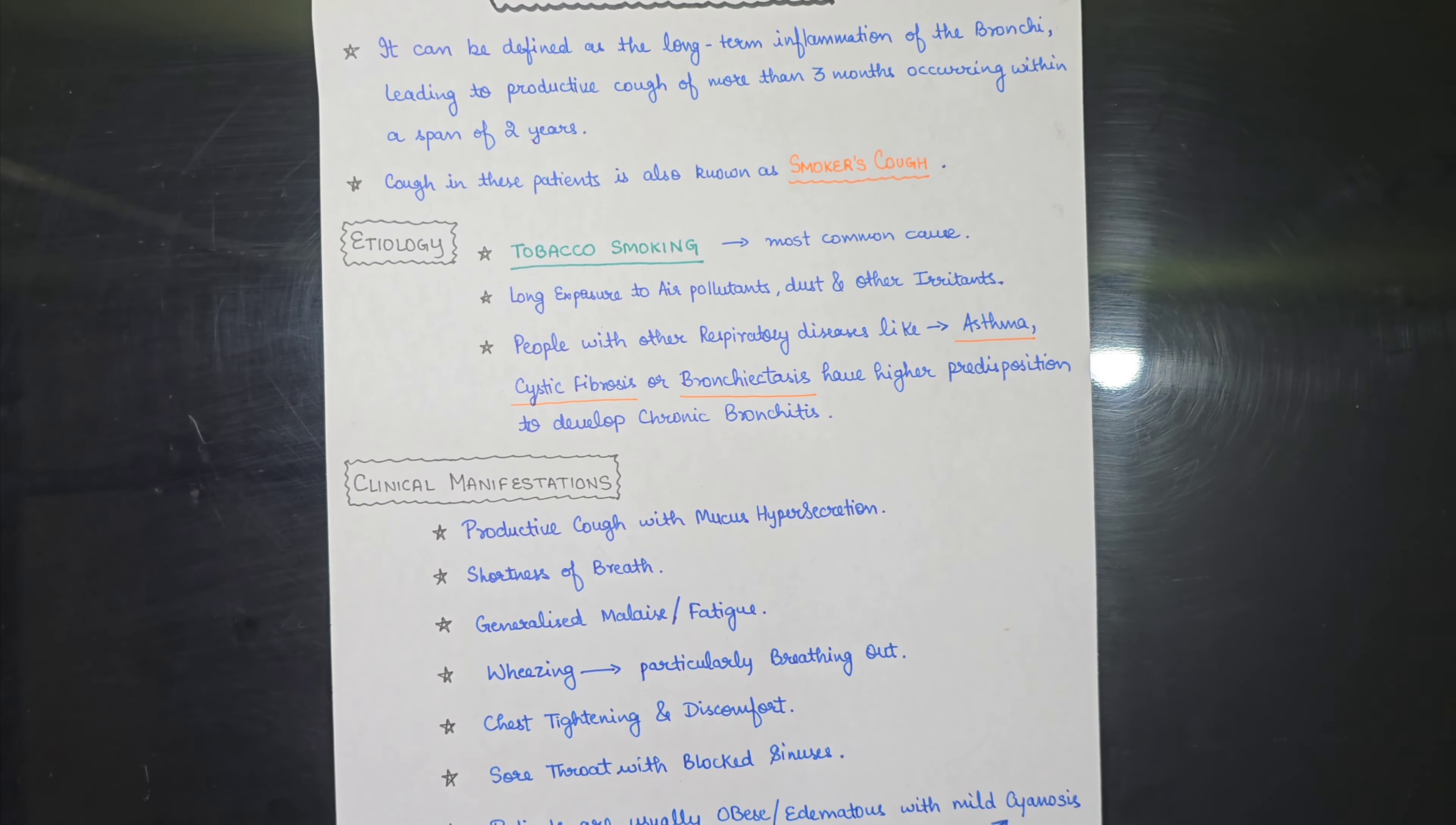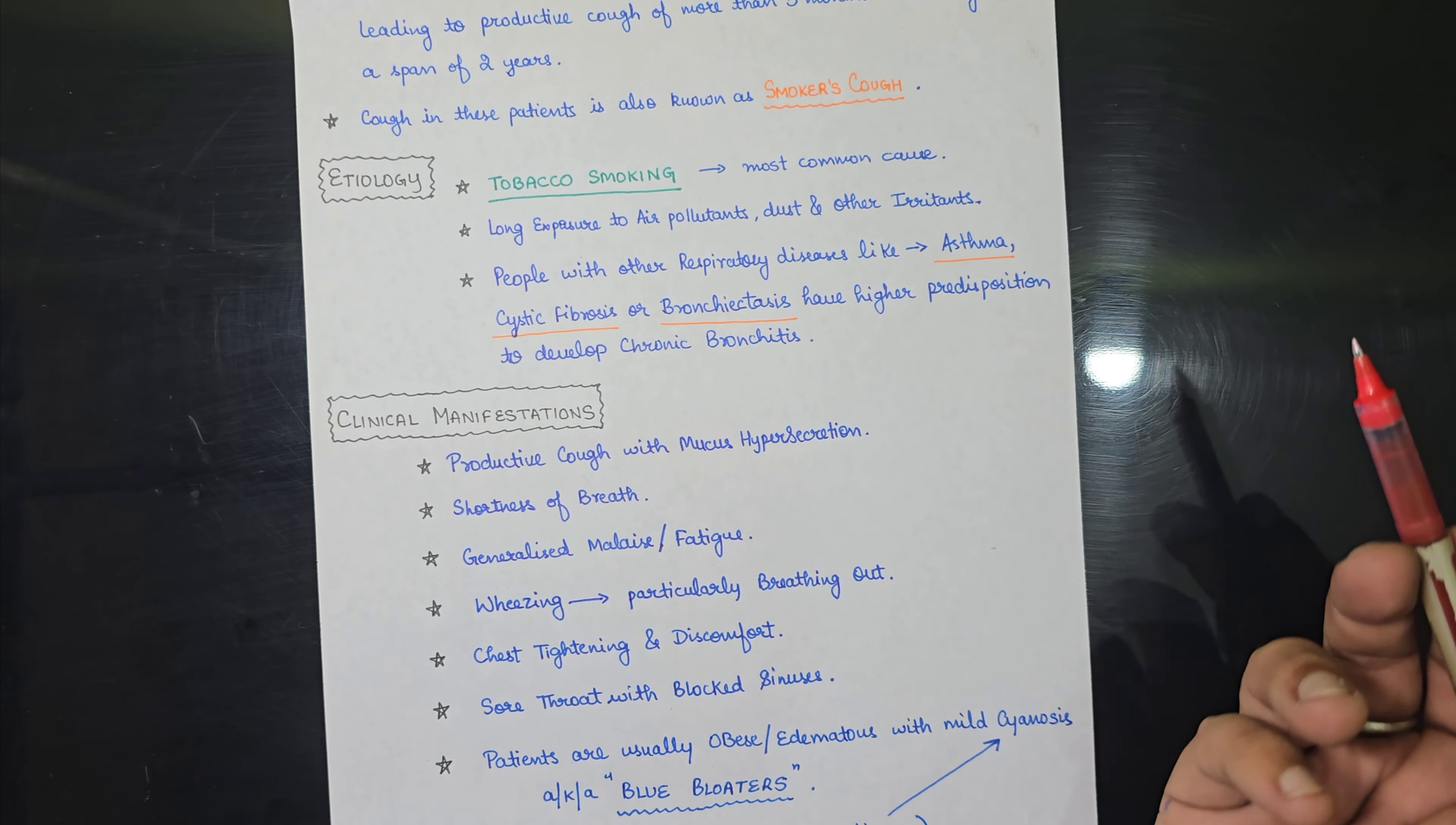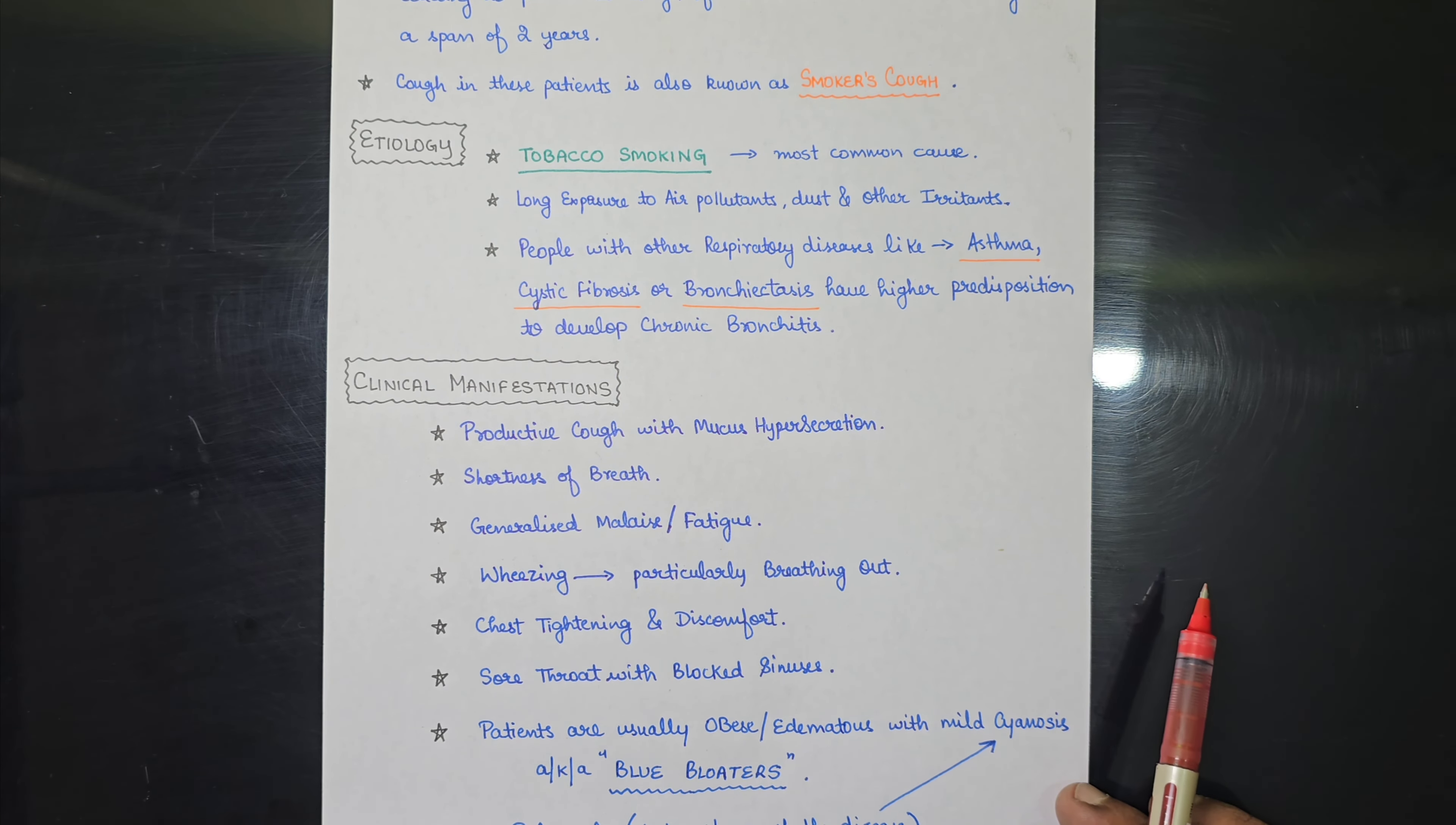So what are the clinical manifestations? The clinical manifestation of chronic bronchitis include productive cough with mucus hypersecretion. Another is shortness of breath. Although shortness of breath is not specific for chronic bronchitis because it is more of an emphysemic disorder. So shortness of breath is another clinical manifestation which can be seen in some patients.